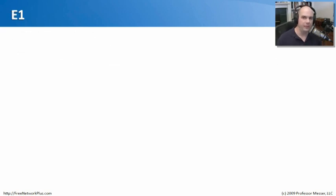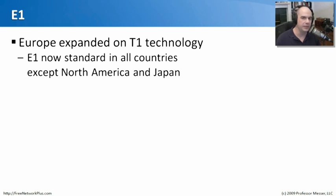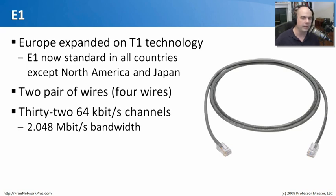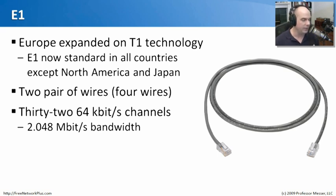Europe took the idea of T1 technology and created a new standard called E1, standardized in almost all countries except North America and Japan. Like the T1, it uses two pairs of wires with RJ45, RJ48S, or RJ48C type connections. The E1 has 32 channels, each 64 kilobits wide, giving just over 2 megabits per second of bandwidth — a little more bandwidth available than a T1, making it a more capable technology.